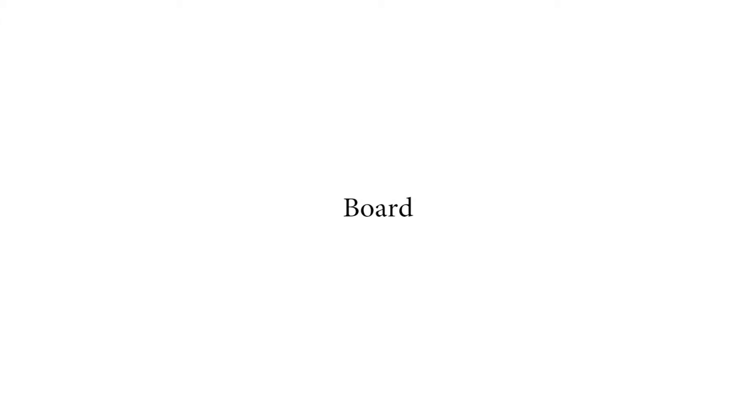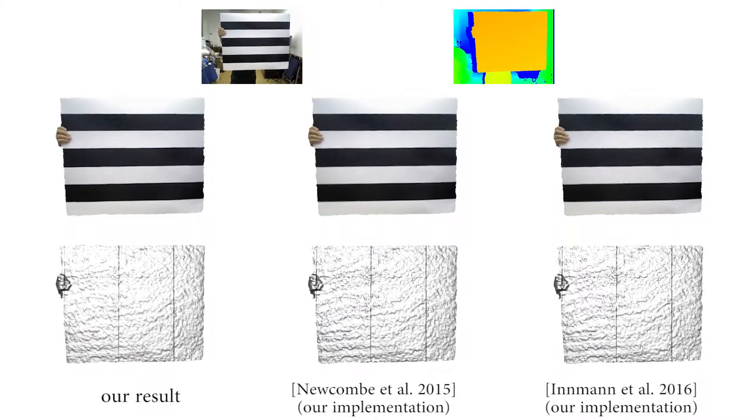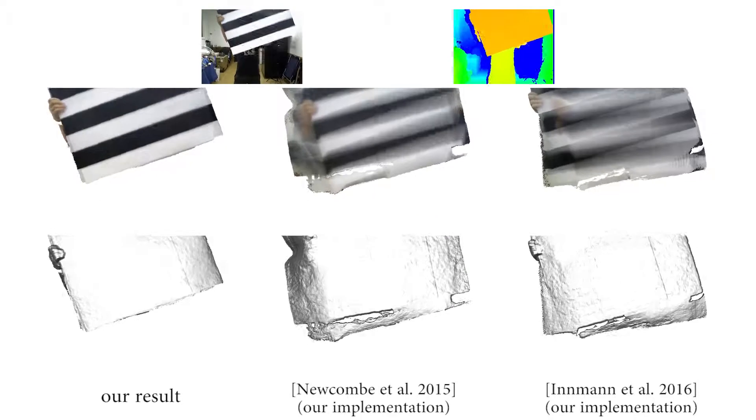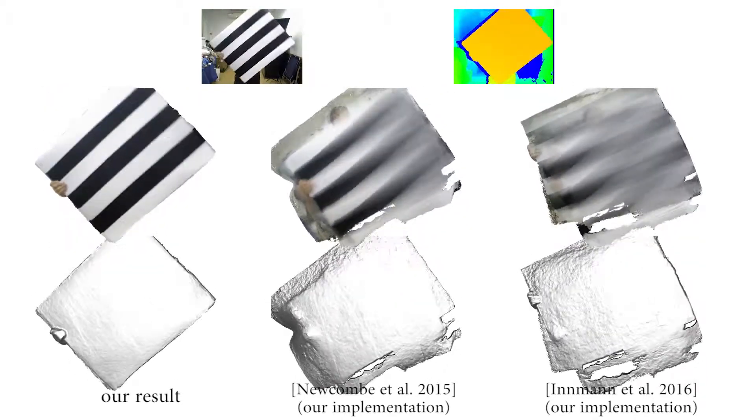Here, we compare our algorithm with two state-of-the-art techniques for real-time reconstruction from a single-view RGBD input. Since the other two methods cannot reconstruct the appearance of the scene as we did, we applied volumetric blending to their results in order to perform texture comparison.